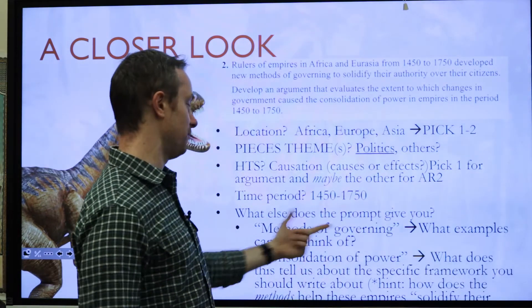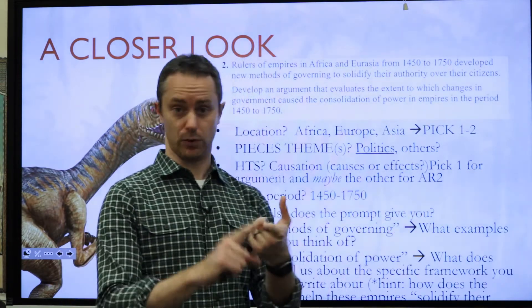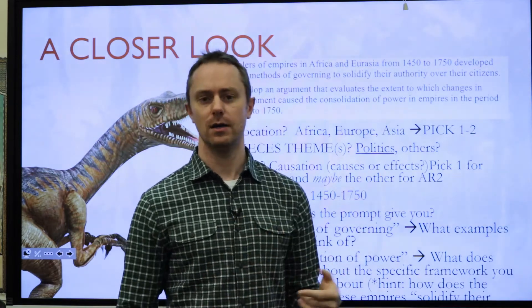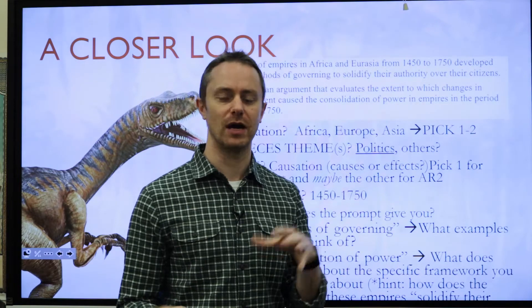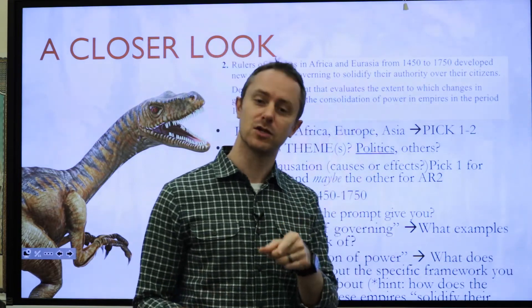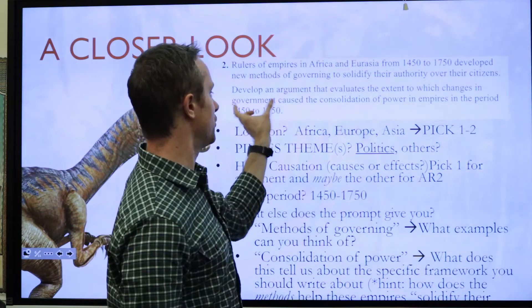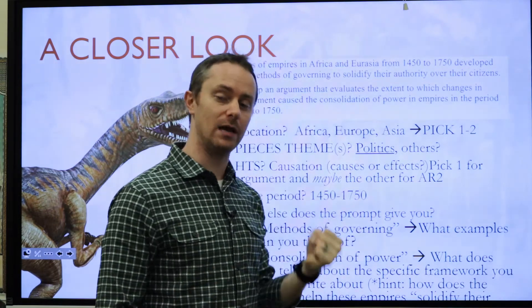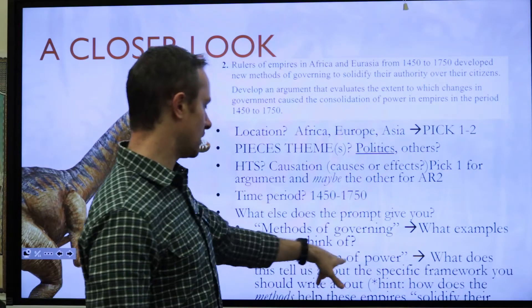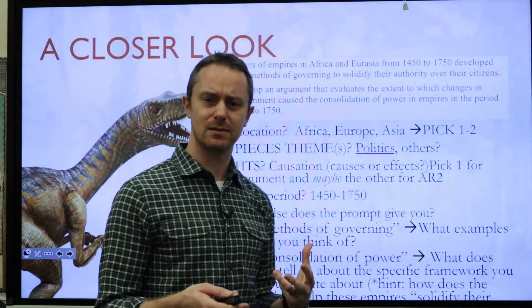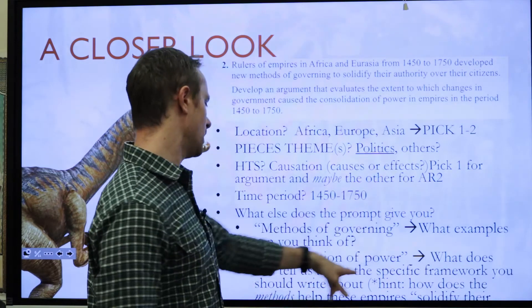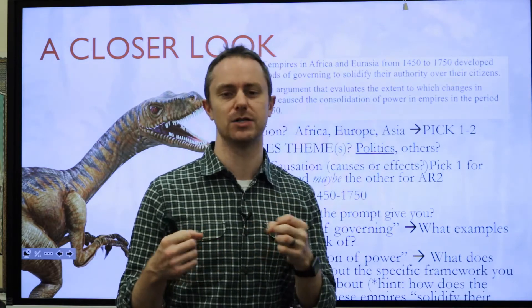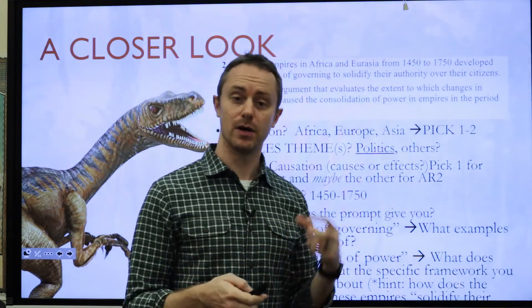What else does the prompt give you? Methods of governing. What examples can we think of? Bureaucracy, central government, oligarchy, democracy, absolute monarchy — you have a lot of different methods we've seen in a variety of places. You've got to think through what those methods are, what caused changes to those methods, and how that may or may not have helped those governments consolidate or gain more power. The term 'consolidation of power' — you've got to know what that means. It's the idea that this is helping the government, the empire, solidify or maintain its power.